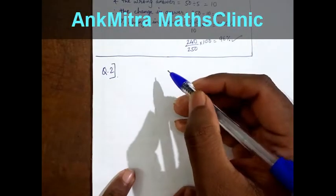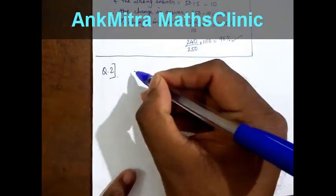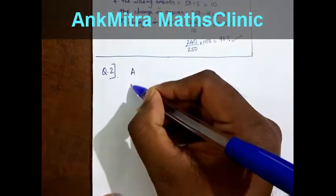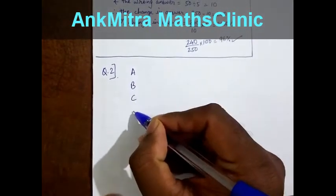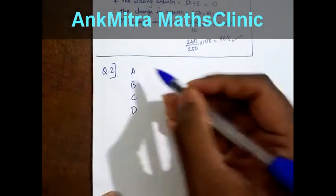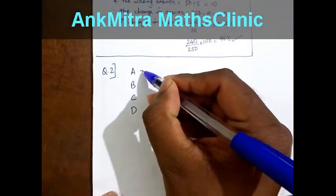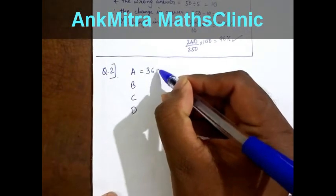In this question it is given that there are 4 students A, B, C and D. They are given that A has scored 360 marks out of a total of 500.